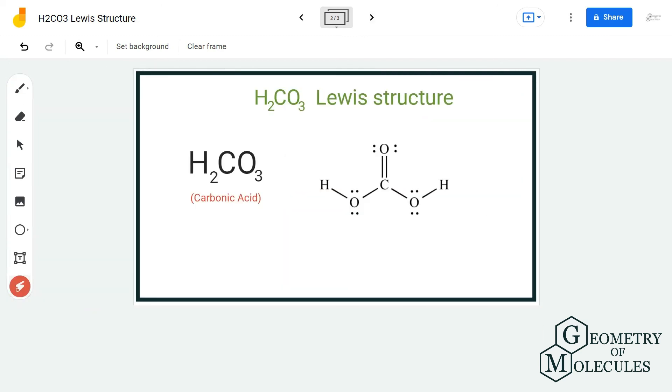This in turn helps carbon have a complete octet, and similarly oxygen also has a complete octet. Hence this is the Lewis structure for carbonic acid.